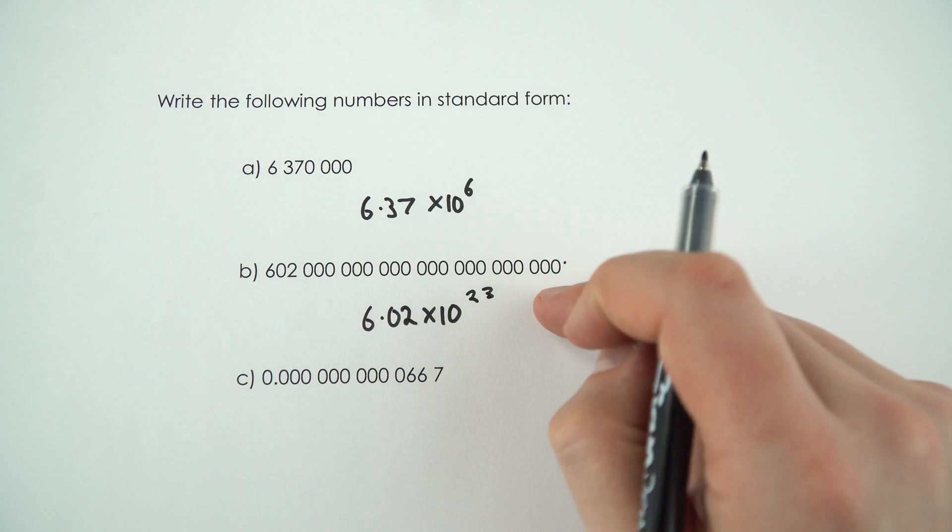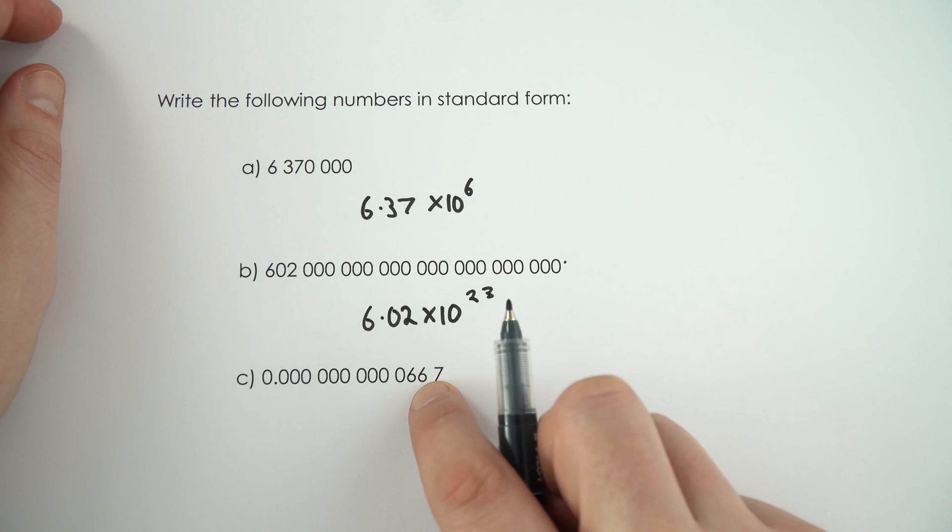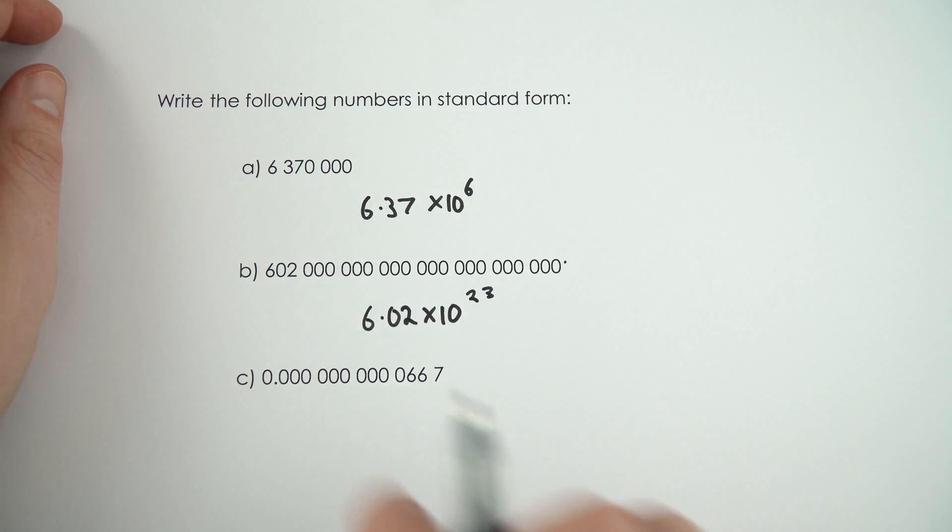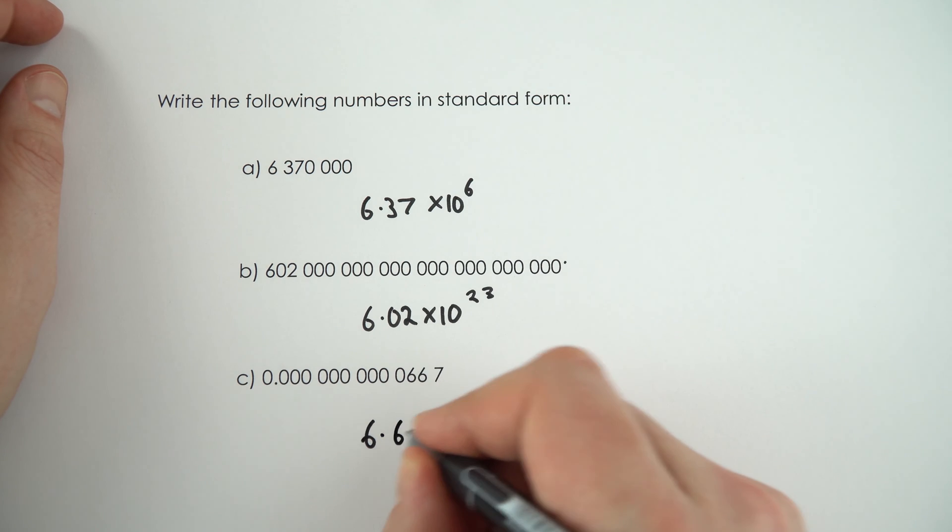You might recognise that number from chemistry. And finally this last example, we've got a really small number now, so it's going to be a negative power. So 0.0000000000667 means our first number is going to be equal to 6.67.